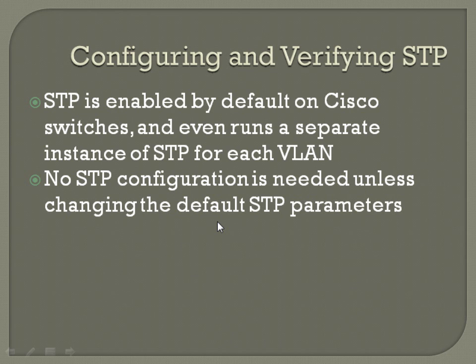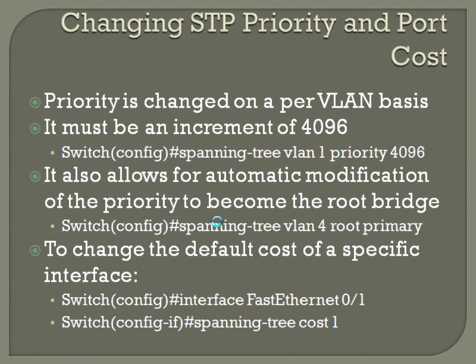You're almost certainly going to want to change STP priority and port cost at some point. Priority is changed on a per-VLAN basis and must be in increments of 4096. From global configuration mode, the command is 'spanning-tree VLAN [number] priority [value]' — in this case, 4096.